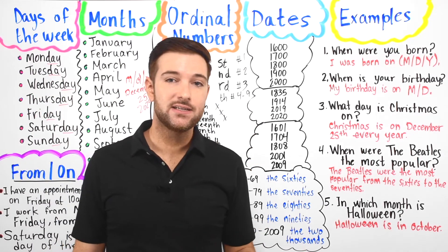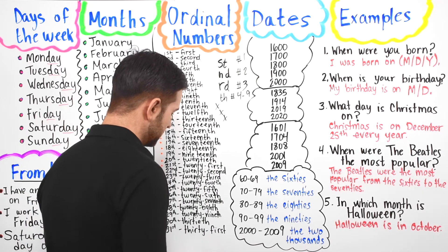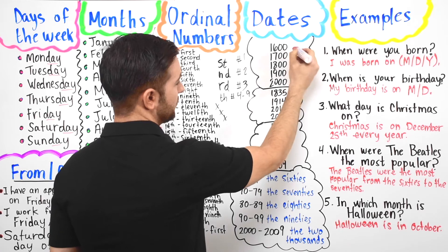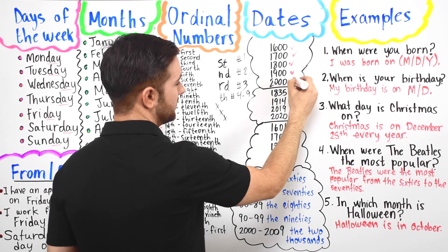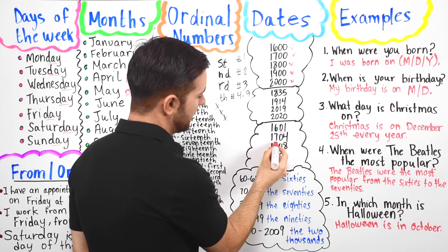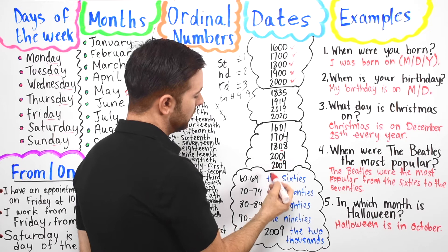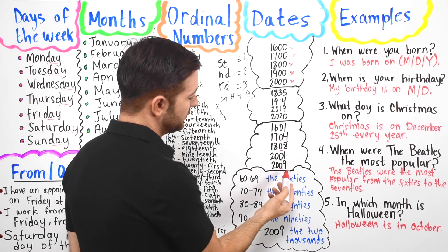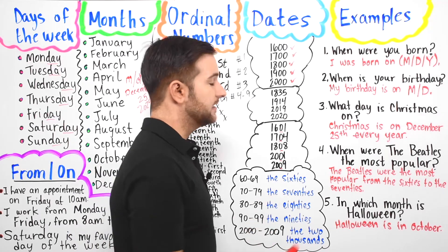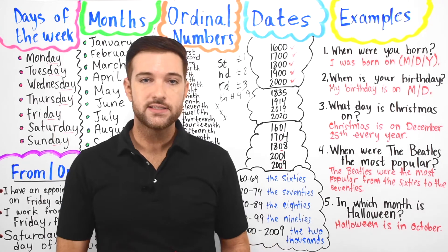When talking about the first nine years of a new century, you pronounce it like this: 1601, 1704, 1808, 20-01, 20-09. For the 2000s, you can also say 2001 and 2009. So: 1601, 1704, 1808, 2001 or 20-01, 2009 or 20-09.